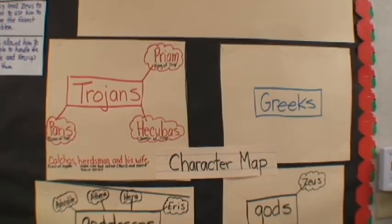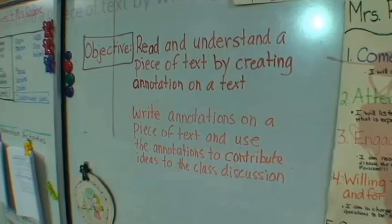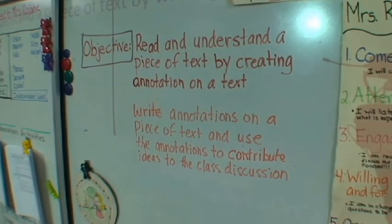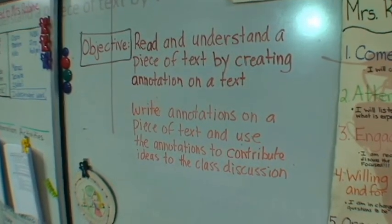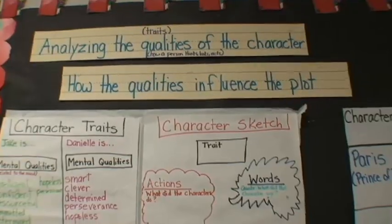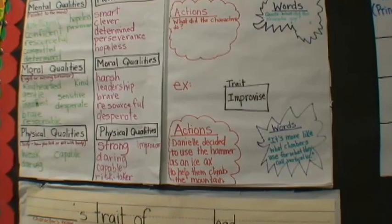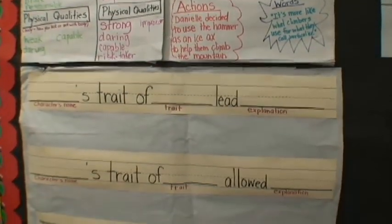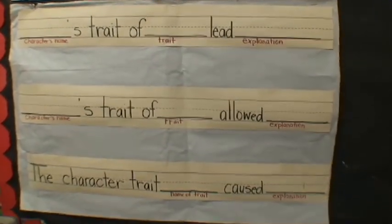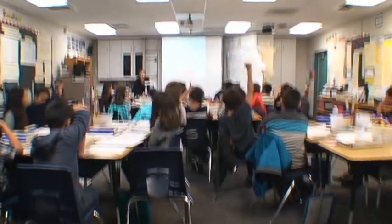Let's go back and make sure we've really looked at the things we were going to focus on. Thumbs up or thumbs down — let's talk about it. Did we read and understand a piece of text by writing annotations? I'm seeing mostly yes. Did we focus our attention on the qualities of a character? Yes. Did you annotate the text for evidence? Yes. We'll see you next time.